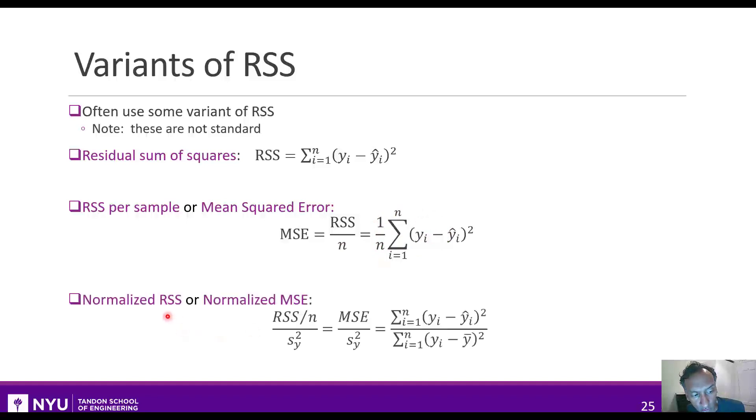We might also think about something called the normalized RSS, which is just the mean squared error divided by the standard deviation. I'll give you an interpretation of this particular quantity at the end of this section.